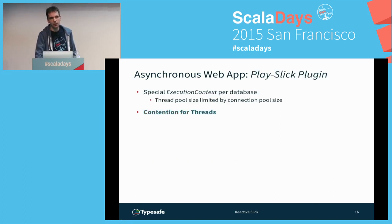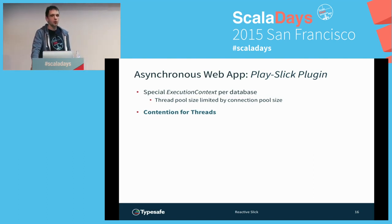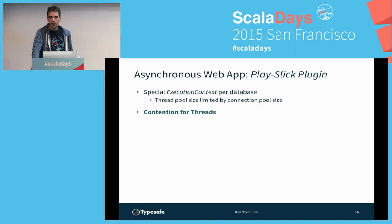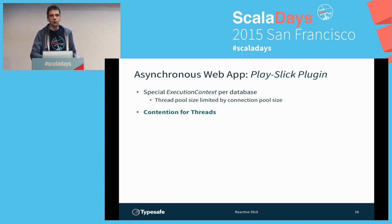What can we do instead? There's the Play Slick plugin, which is what you'd currently use for Slick with Play. This plugin gives you a special execution context per database — a thread pool with the same size as your connection pool, which you configure in your database config. So you get as many threads as you have connections, which means there is no more contention for connections. Every getConnection call is guaranteed to succeed immediately because you only have ten threads contending for ten connections.